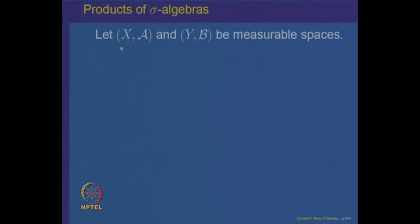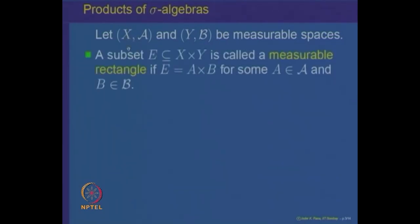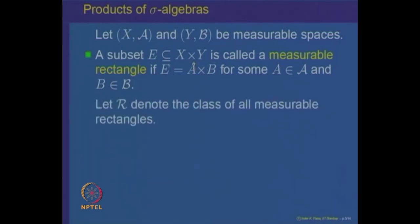Let us start with two measurable spaces X,A and Y,B. Then a subset of the product space X×Y is called a measurable rectangle if it looks like A×B, where A belongs to the sigma algebra A and B belongs to the sigma algebra B. The collection of all measurable rectangles, denoted by R, consists of all subsets of X×Y of the type A×B, where A is in sigma algebra A and B is in sigma algebra B.